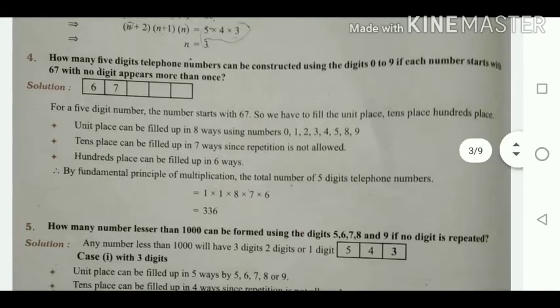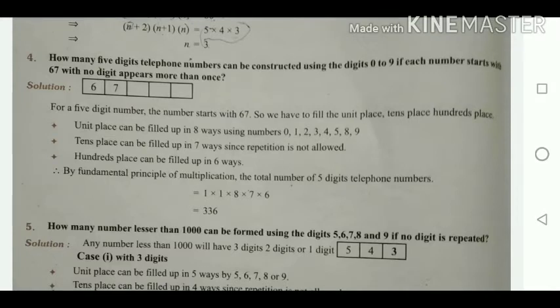This is how you find the count when telephone numbers cannot have repeated digits — each digit can be used only once.